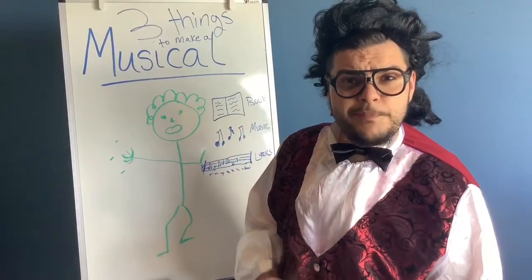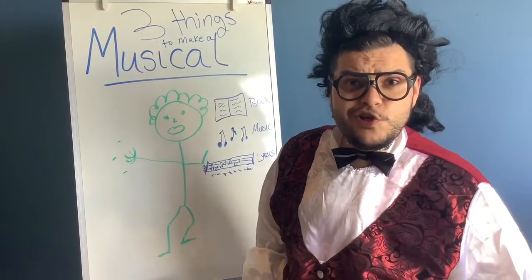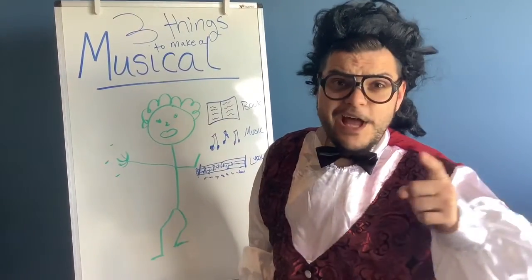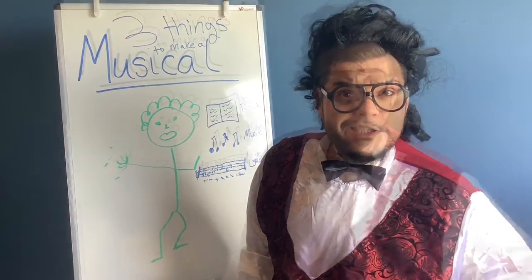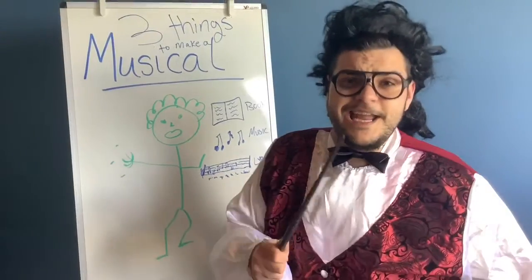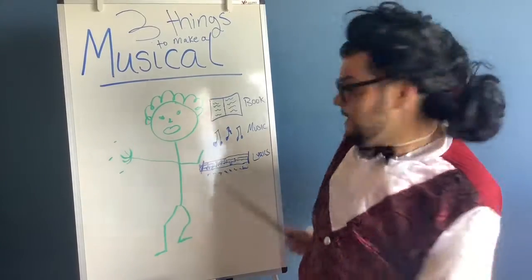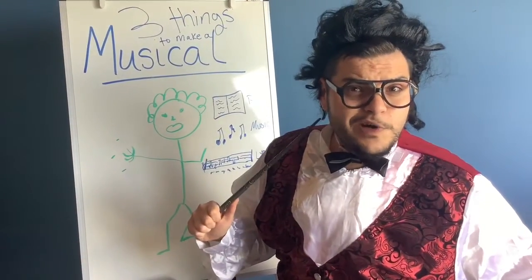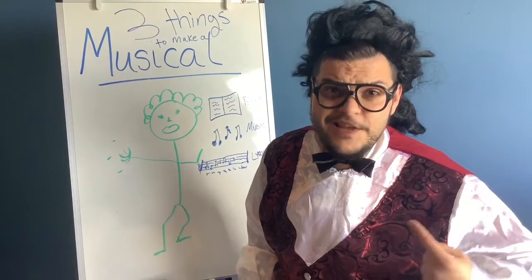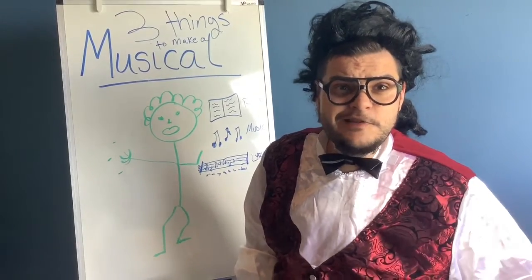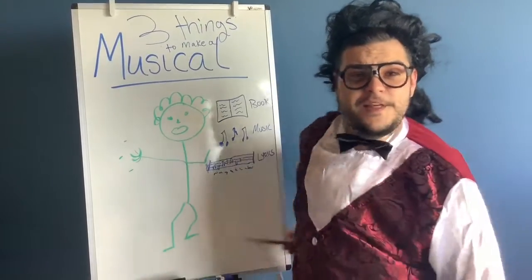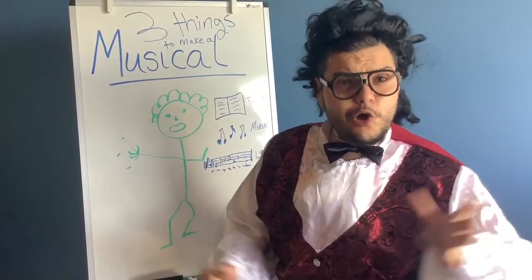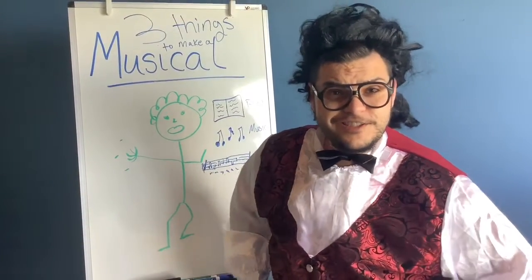Now we'll learn the three parts that make a musical. First, the book — that's where the story is written. Next, there's the music — that's the sound that we hear, the instruments and the singing. And third, the lyrics — those are the words that go along with the songs.